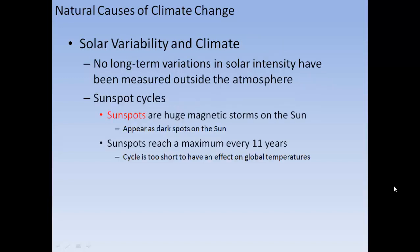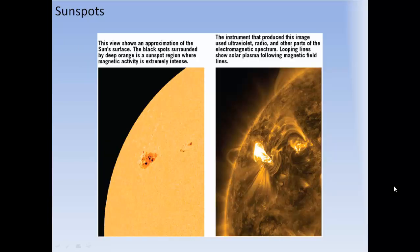Solar variability and climate: no long-term variations of solar intensity have been measured outside the atmosphere. Sunspots are huge magnetic storms on the sun that appear as dark spots; they reach a maximum every 11 years, but the cycle is too short to significantly affect global temperatures. Sunspots and solar plasma along falling magnetic field lines are visible from these storms.